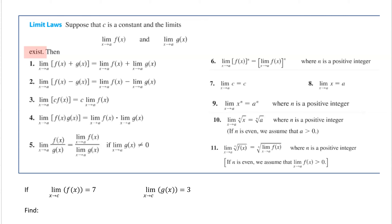Before we go over limits, we need to cover the laws of limits. We have some restrictions for these rules to be true. C is a constant, and f(x) and g(x) both exist — that is very important. If f(x) and g(x) exist, then all of these rules are true.